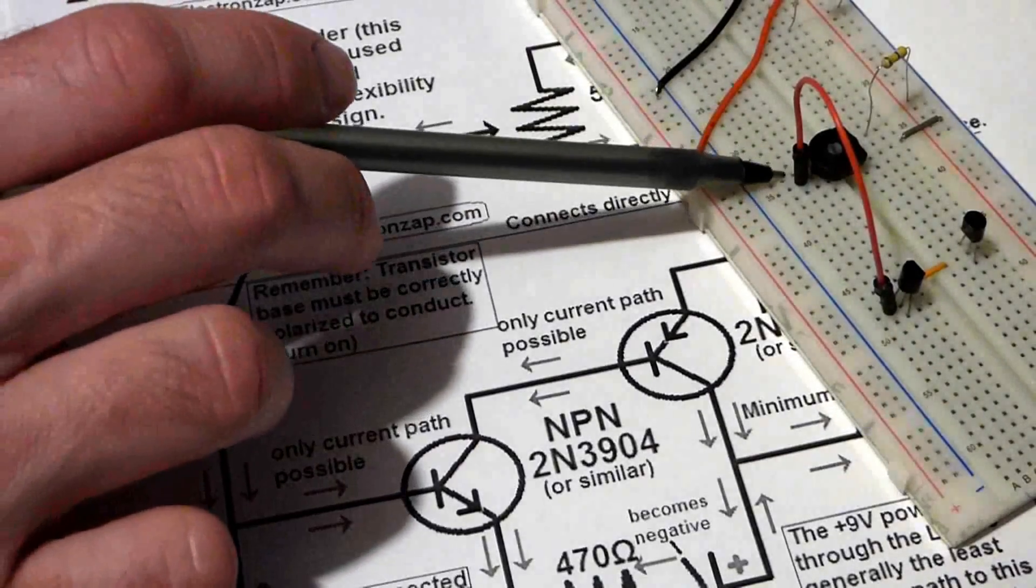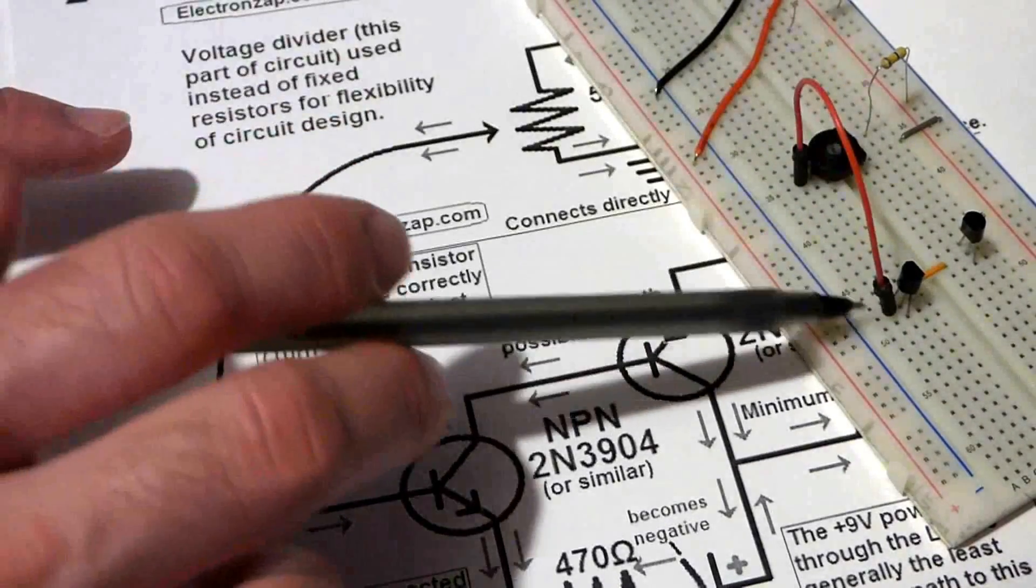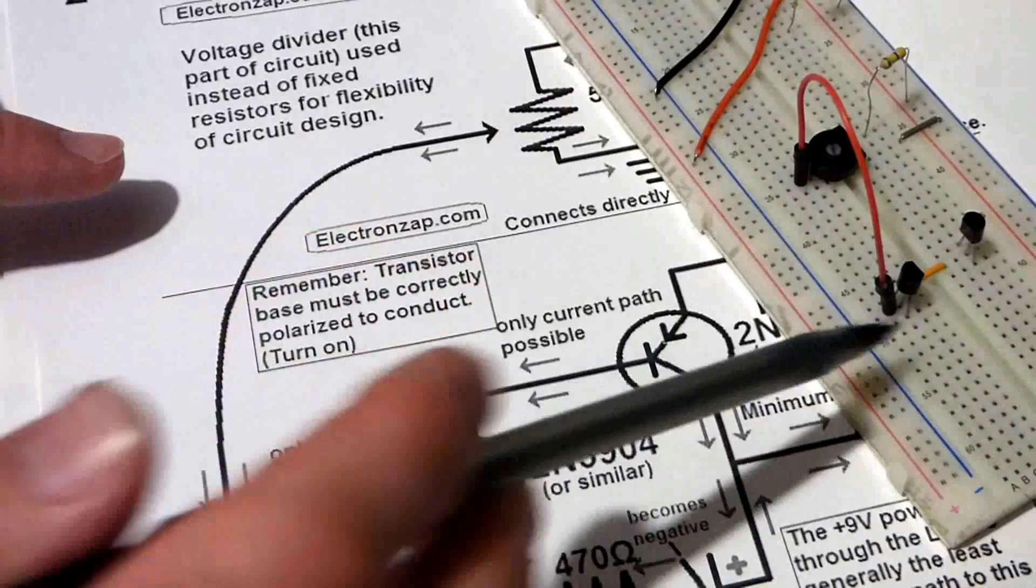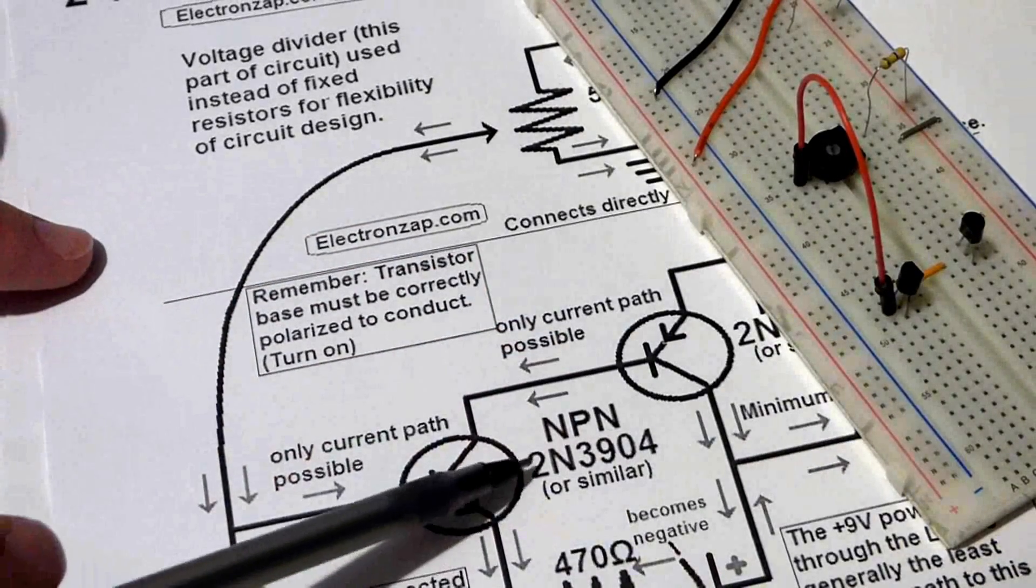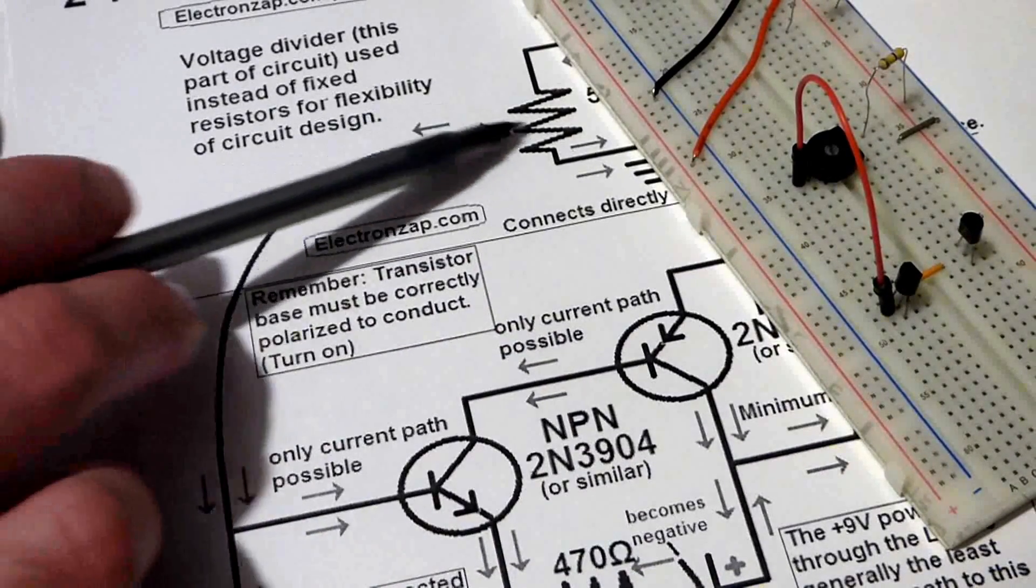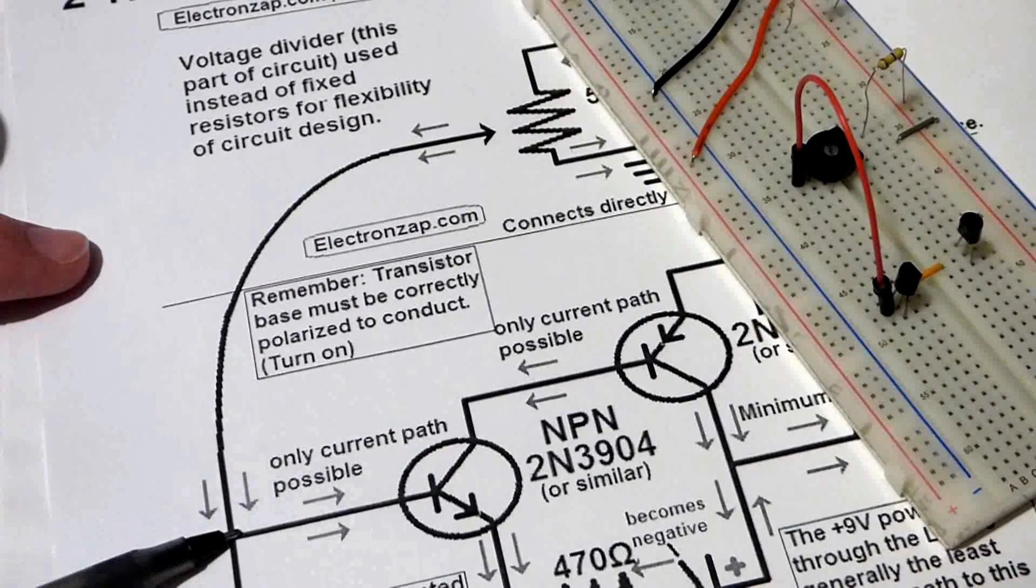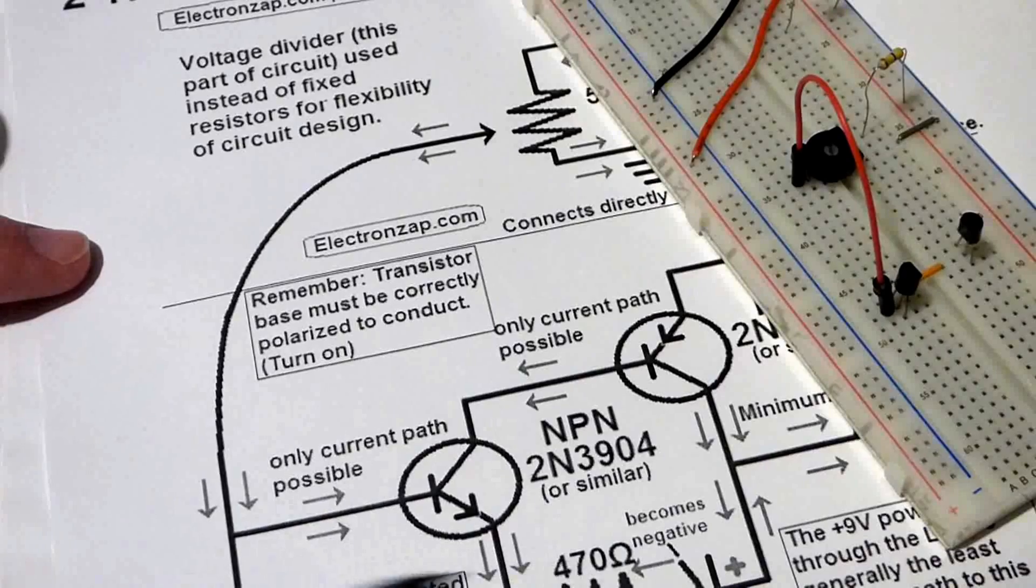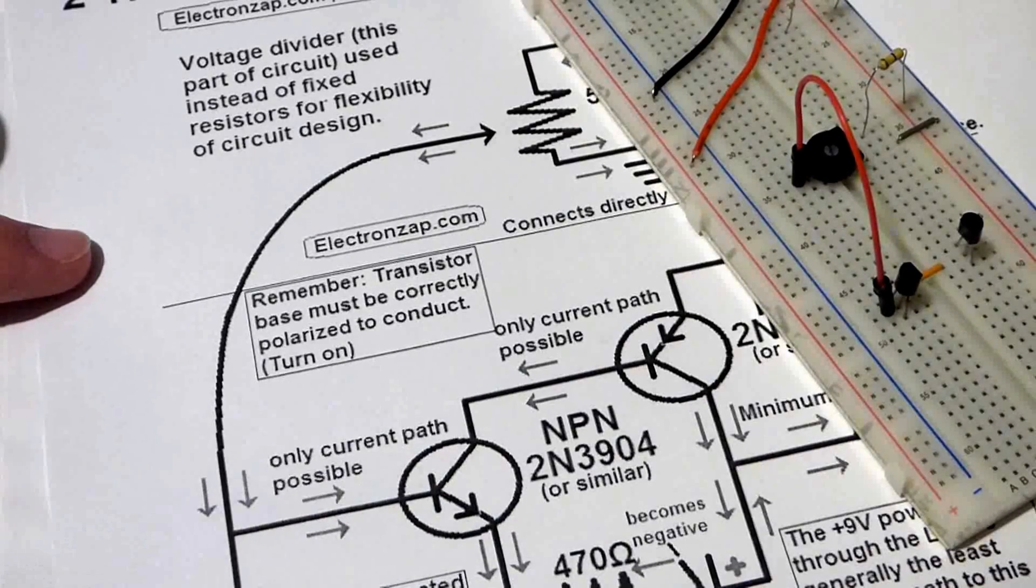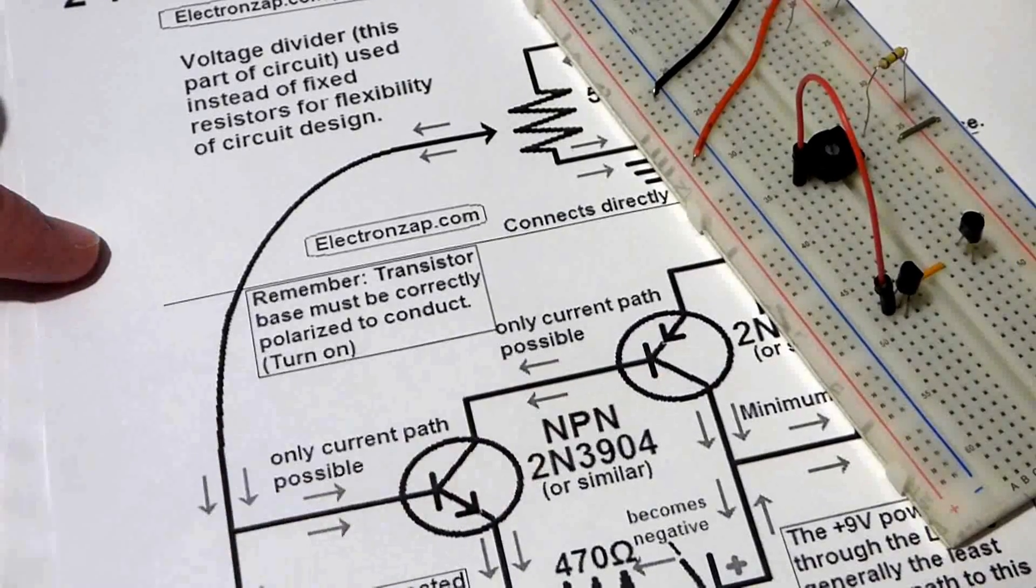And the output of the voltage divider comes to the middle pin, the base of the NPN transistor, which we're going to use the 2N3904. So there's the output, you see that it comes there. And also it's going to go to another resistor, but we'll get to that later. We're going to cover the transistors now.